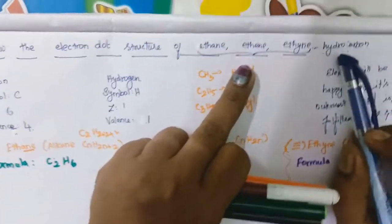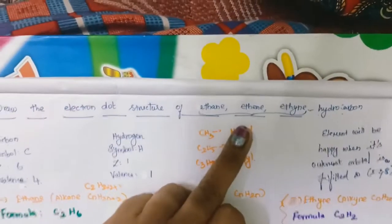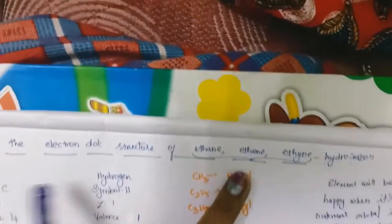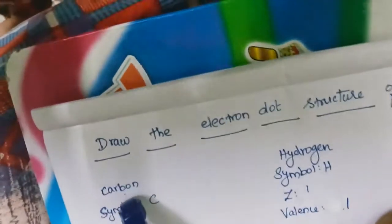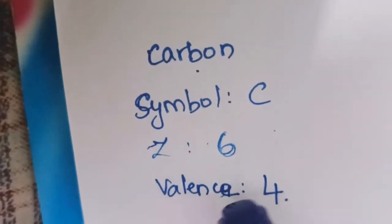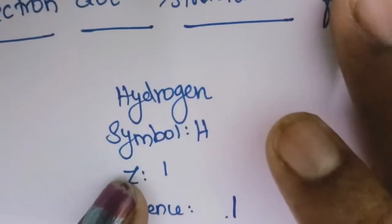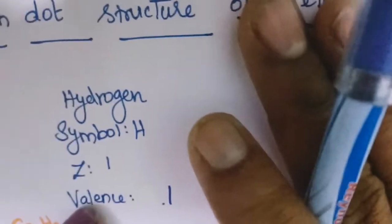What is called a hydrocarbon? Hydrocarbon means if the compound is made up of hydrogen and carbon, it is called a hydrocarbon. The symbol of carbon is C, the atomic number is 6 and valency is 4. The hydrogen symbol is H, atomic number is 1 and the valency is also 1.